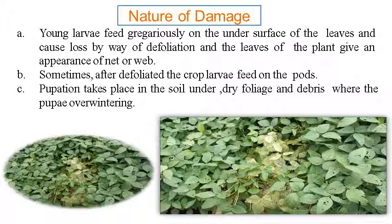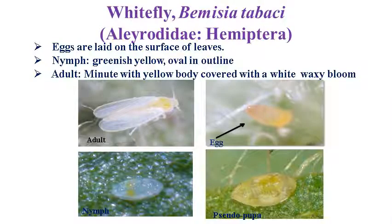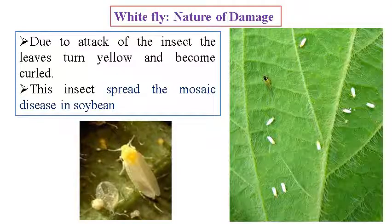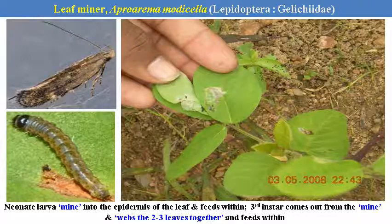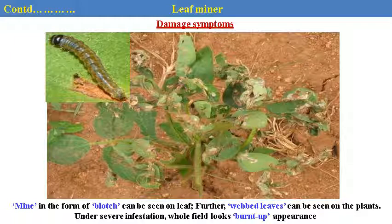Nature of damage: young larvae feed gregariously by making skeletonized leaves, same as for Spodoptera litura — causing complete loss by defoliating the leaves. The plant gives an appearance of net or web. Sometimes in the later stage of the crop, larvae feed on the pods also. If the pupation takes place in the soil, the adults follow into debris where the pupae are entering into the soil.